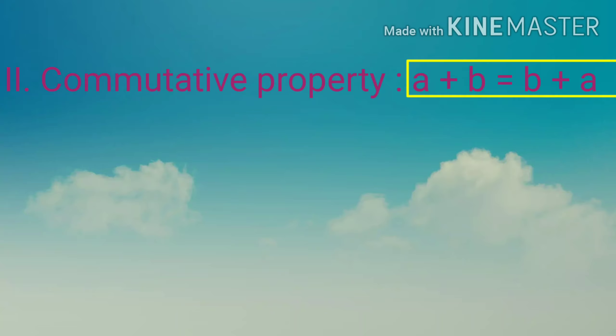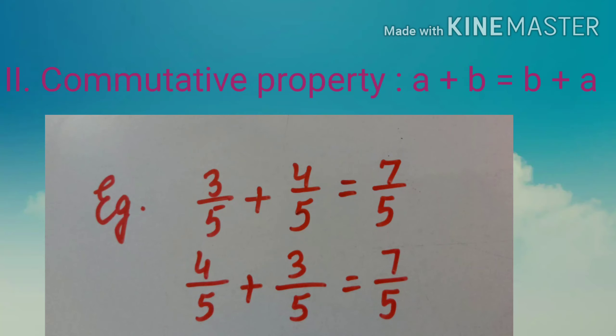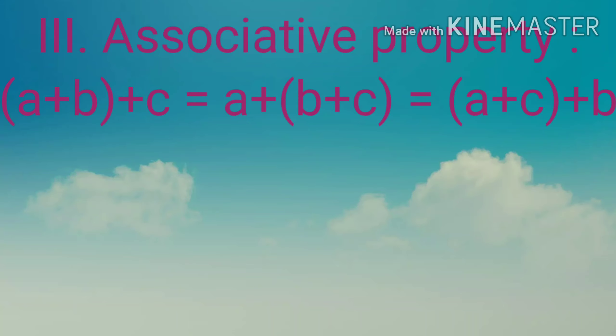The first property is the closure property, which says the sum of two rational numbers is also a rational number. Symbolically, if a and b are rational numbers, then a plus b equals c, also a rational number. For example, 3/5 plus 4/5 equals 7/5, where 3/5, 4/5, and 7/5 are all rational numbers. So we can say the sum of rational numbers is closed.